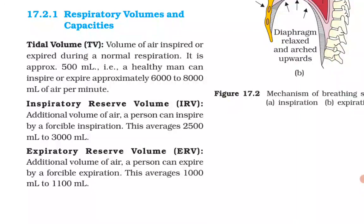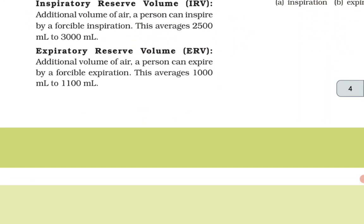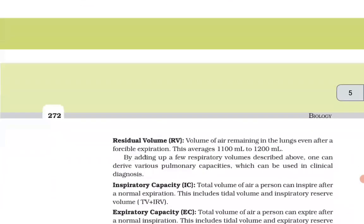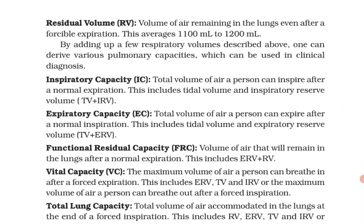A healthy man can inspire or expire approximately 6000 to 8000 ml of air per minute. Inspiratory Reserve Volume (IRV) is the additional volume of air a person can inspire by a forcible inspiration — this averages 2500 to 3000 ml. Expiratory Reserve Volume (ERV) is the additional volume of air a person can expire by a forcible expiration — this averages 1000 to 1100 ml. Residual Volume (RV) is the volume of air remaining in the lungs even after a forcible expiration — this averages 1100 to 1200 ml.